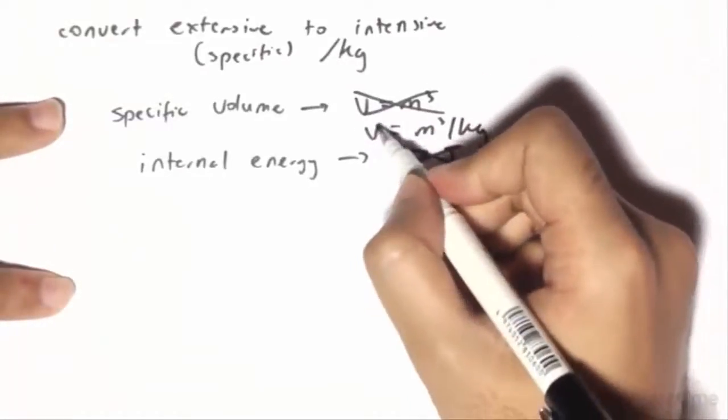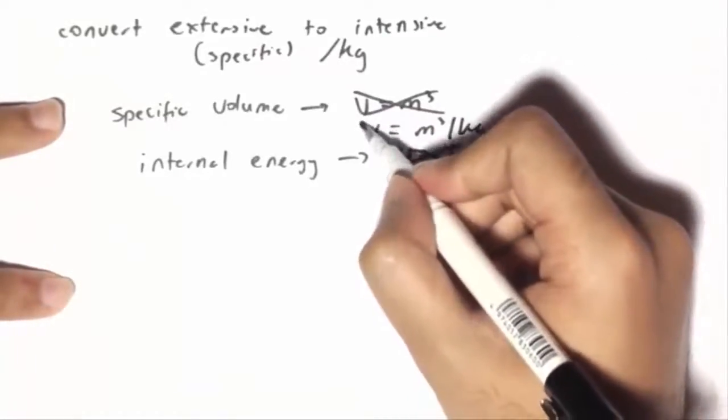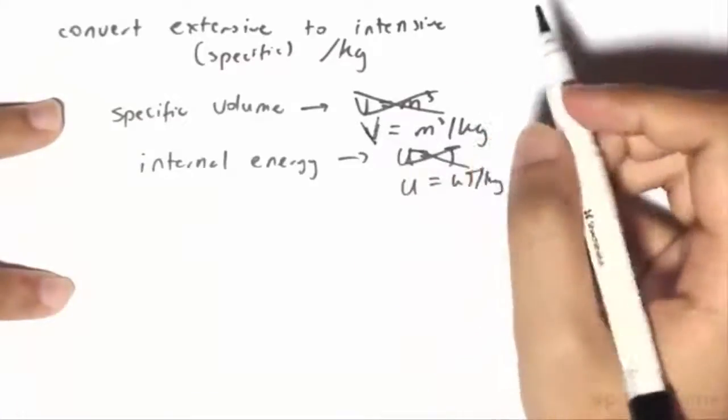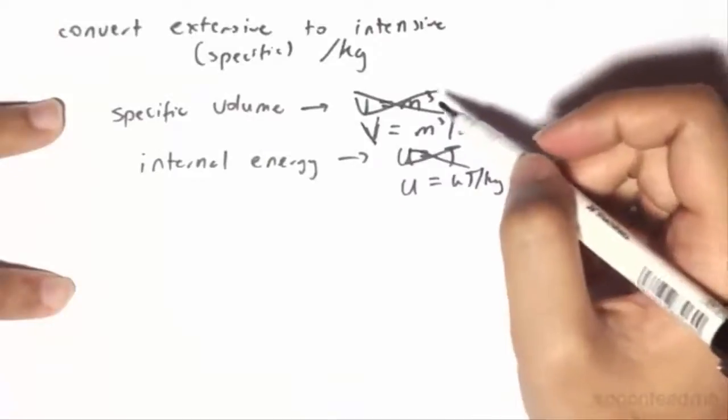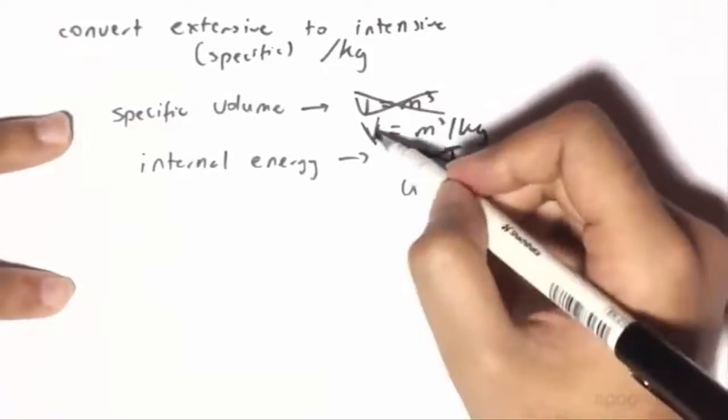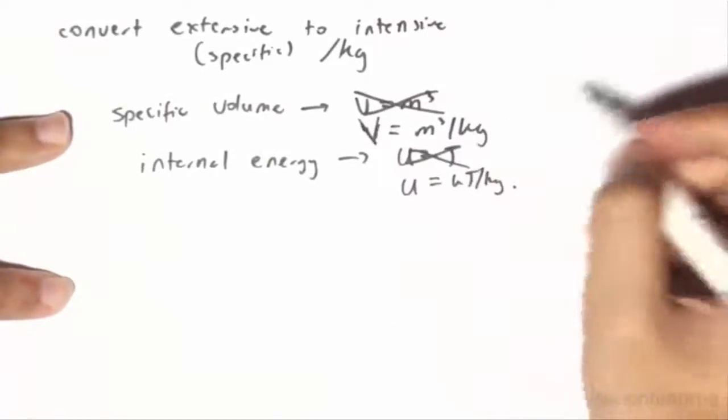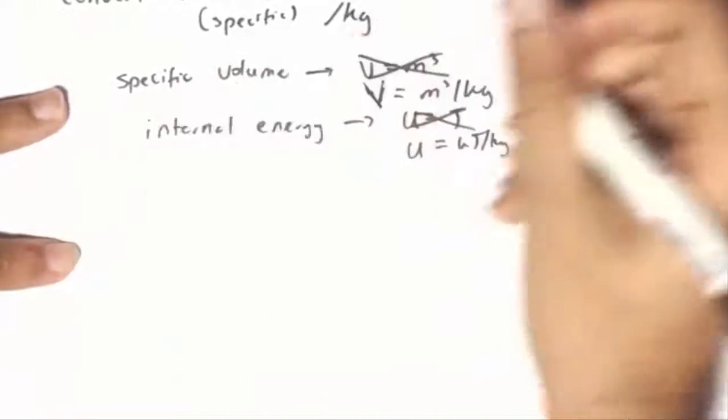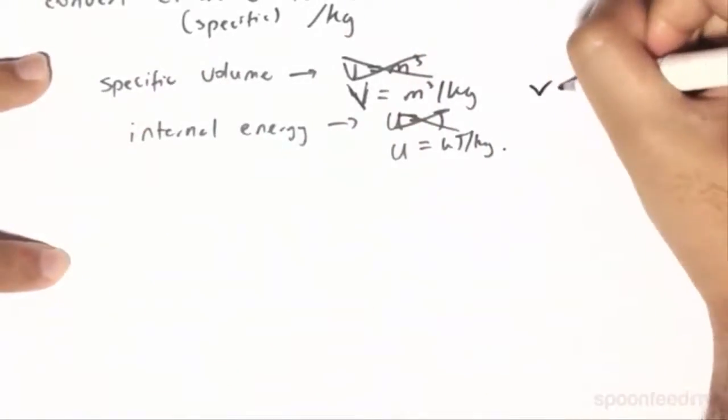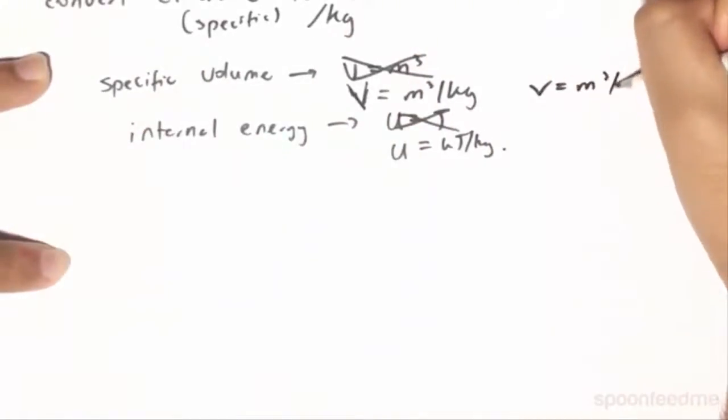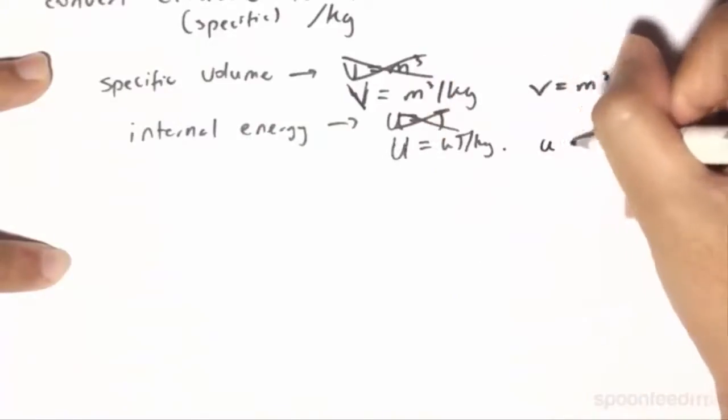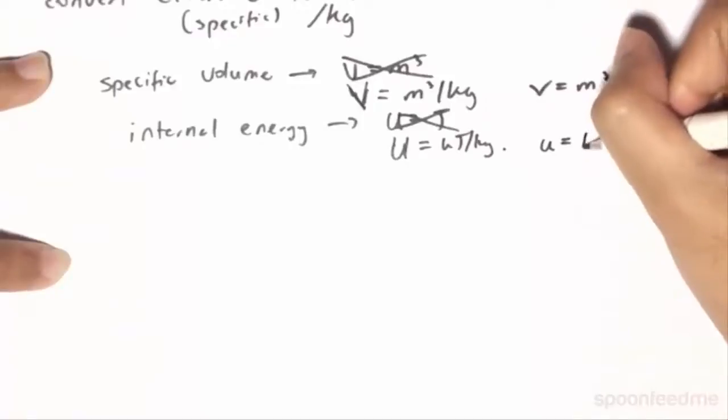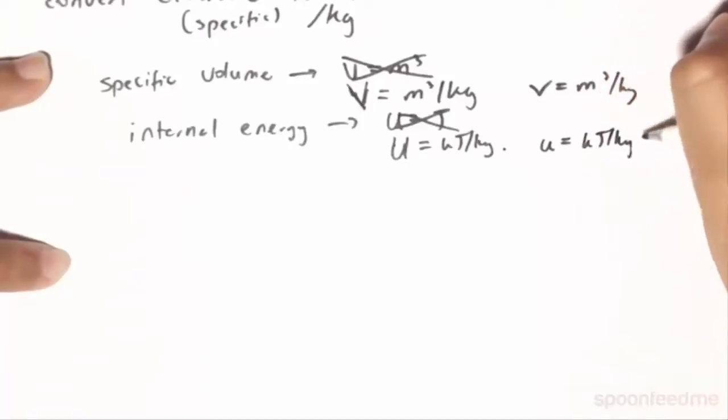Obviously, if we leave it in terms of this symbol, we can confuse people in terms of if it's in specifics or not. So rather, what we need to do is change the uppercase letter into a lowercase letter. So specific volume will actually be a lowercase v in meters cubed per kilogram, and the internal energy will be lowercase u in kilojoules per kilogram.